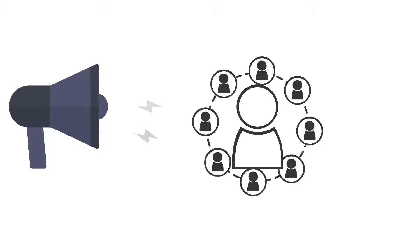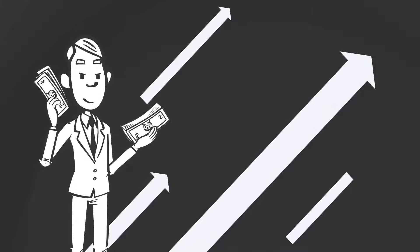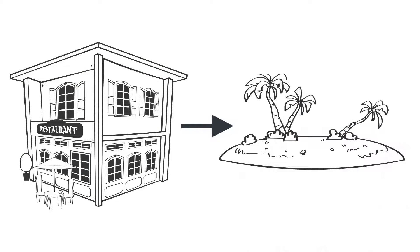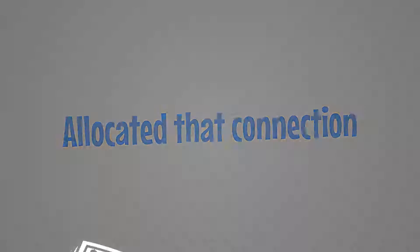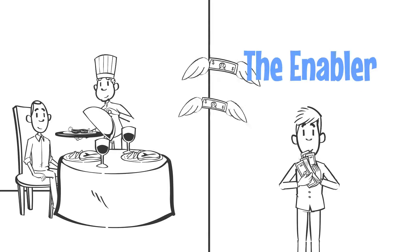Mesh enablers that promote connections on the mesh regularly earn as the consumption of services grow. For example, the enabler connecting a restaurant to a resort is allocated that connection and earns revenue as services are consumed by this resort's guests at that restaurant.